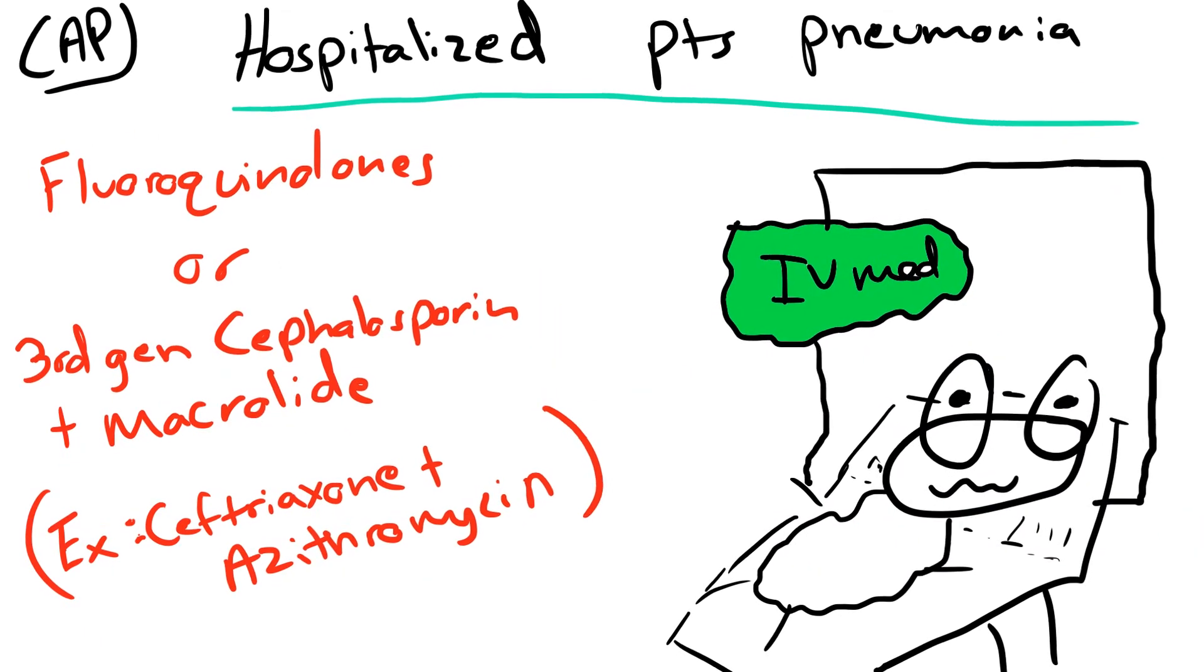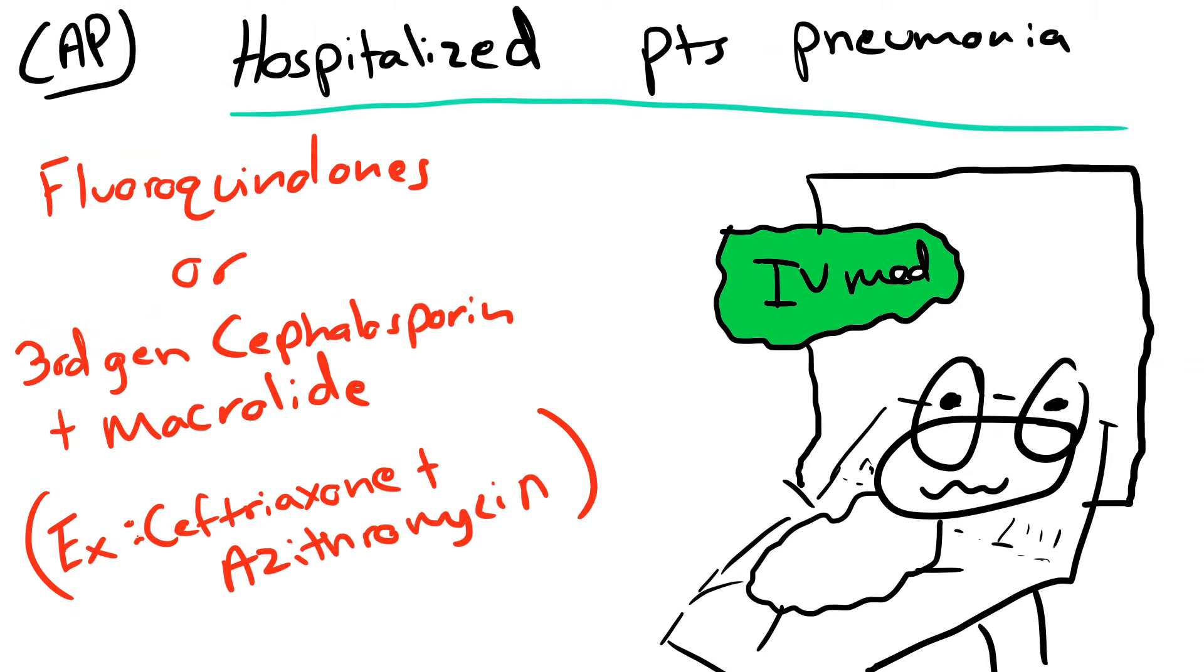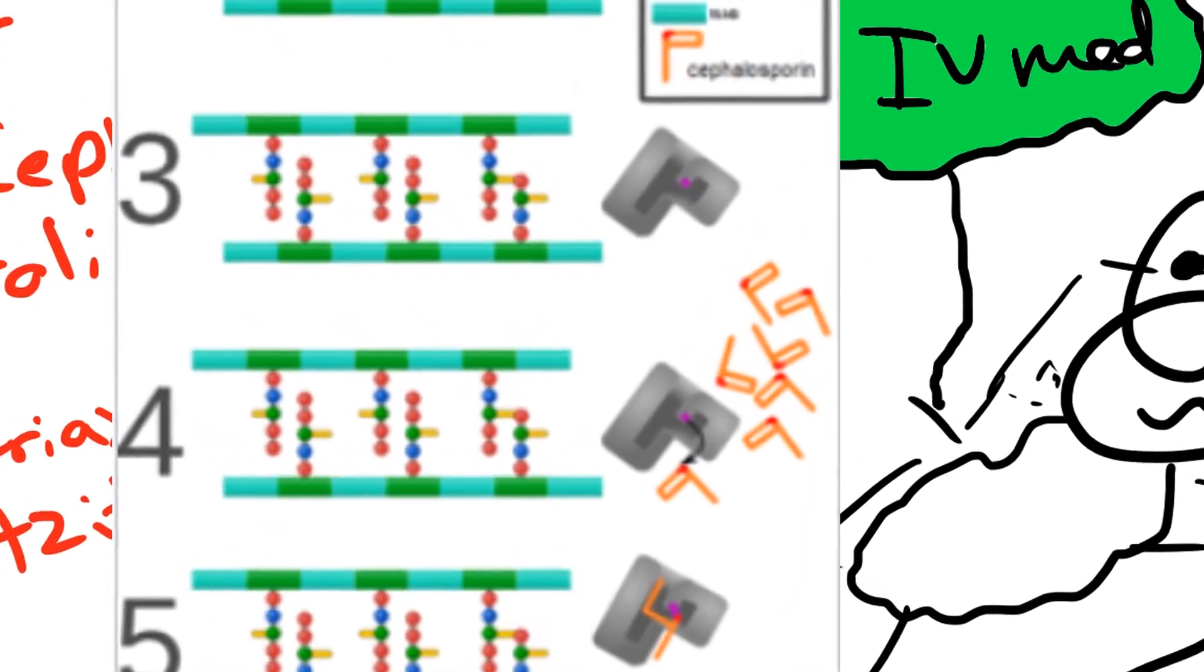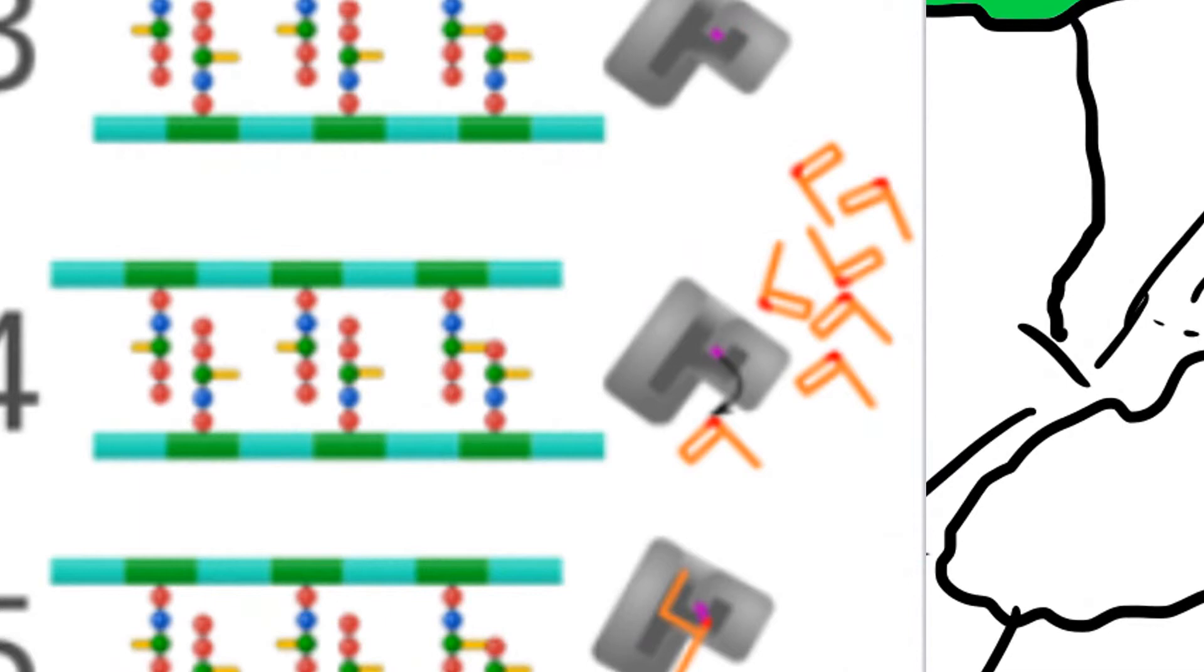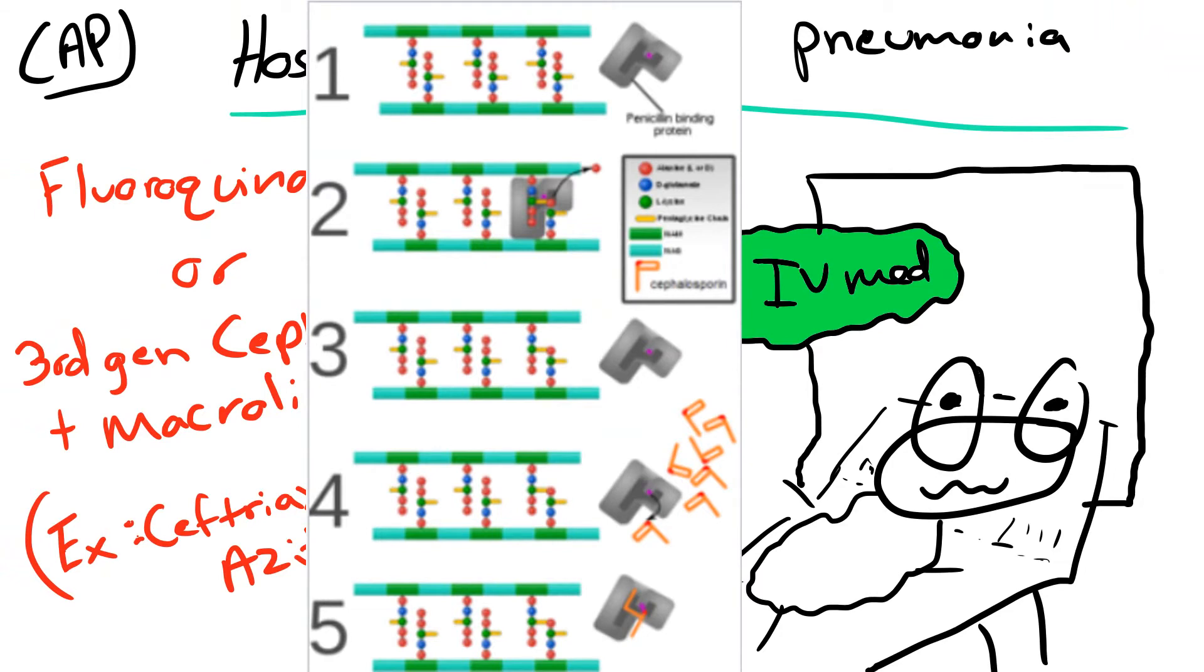So for hospitalized patients, we can use fluoroquinolones alone or a third generation cephalosporin plus a macrolide. So say for example, ceftriaxone with azithromycin. So if you want to know how they work, cephalosporins are bactericidal. They disrupt the peptidoglycan layer of the cell wall by screwing up the final step, which is involved with the penicillin binding proteins, aka PBPs. So these PBPs act like glue and stick the D-ala-D-ala to the neuropeptides to help cross-link the peptidoglycan layer. So the cephalosporins end up mimicking the D-ala-D-ala site. So the PBPs end up sticking to them instead and there's no stabilization of the cell wall and yeah, pretty much everything gets destroyed.